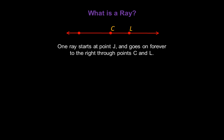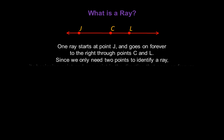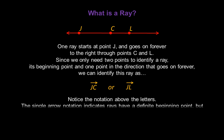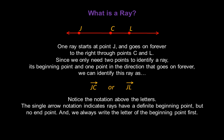One ray starts at point J and it goes on forever to the right through points C and L. Since we only need two points to identify a ray — its beginning point and one of the points in the direction that goes on forever — we can identify this ray in two different ways. We can call it ray JC by writing J then C with a ray symbol above it, or we could call it JL with the ray symbol above it. The single arrow notation indicates rays have a definite beginning point but no end point, and we always write the letter of the beginning point first, so the arrow will always be pointing to the right.